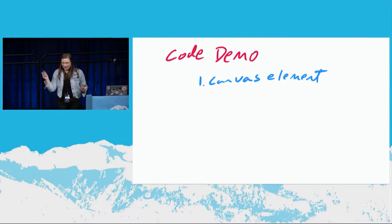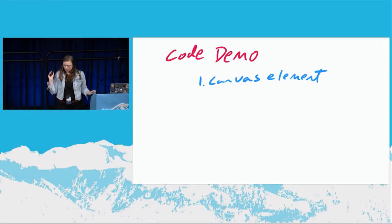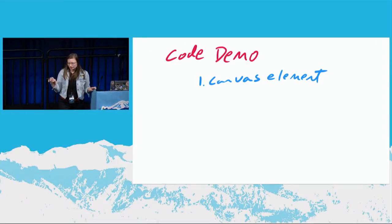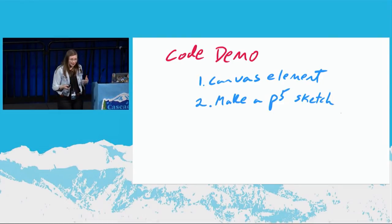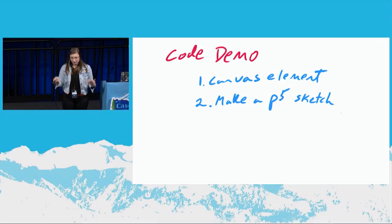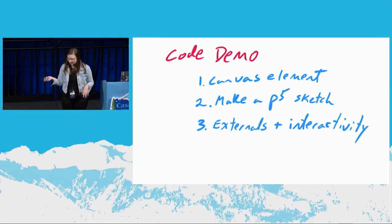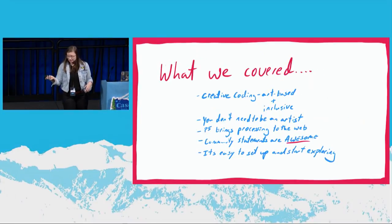So the way that I'm going to go through this demo is: first I'm going to show you how to work with the raw canvas element without having P5, just for comparison's sake. Next I'm going to show you how to make a P5 sketch — that's their word for a P5 program. I'm going to show you a little bit about working with externals and interactivity, and then I'm going to show you a little bit about plugging in extra JavaScript libraries.